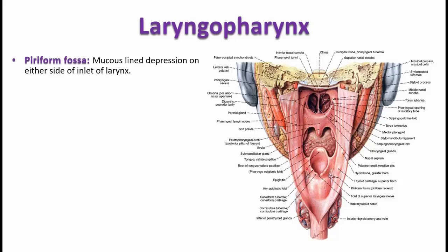When you swallow, the bolus of food passes on either side through the food channels. It might also pass over the epiglottis. The whole larynx gets elevated and approximated so that the inlet is closed. We will discuss this in the later part of this lecture. Now, coming back to the piriform fossa.